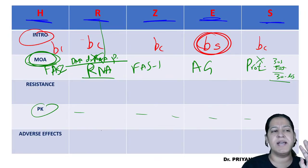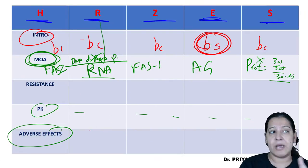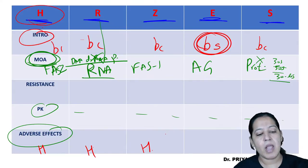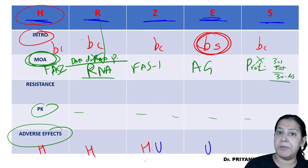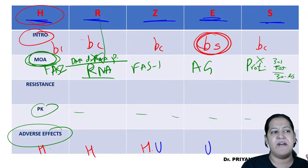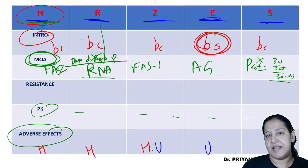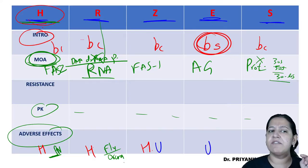Let me revise the pharmacokinetics and adverse effects before moving to DOTS. The most important adverse effect common to the first three drugs — isoniazid, rifamycin, and pyrazinamide — is hepatitis. Hyperuricemia (gout) is shared by pyrazinamide and ethambutol. Isoniazid has a peculiar side effect: peripheral neuropathy due to pyridoxine deficiency. Rifamycin causes flu-like syndrome and orange-colored urine and secretions.